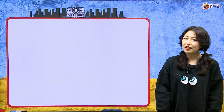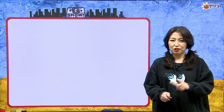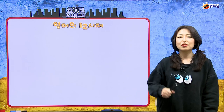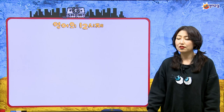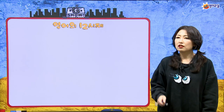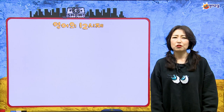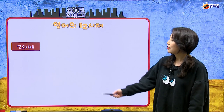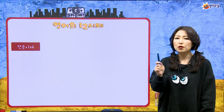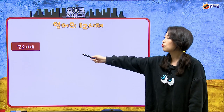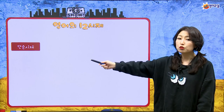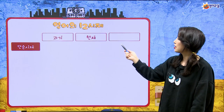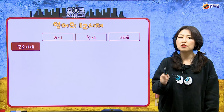시작하기 전에 질문. 영어에는 몇 시제가 있다고? 그렇지, 12시제가 있다고 우리 계속 반복적으로 이야기해 왔어요. 이 12시제를 막 다 나열해서 외우려면 어렵잖아요. 그래서 선생님이 쉽게 외우는 방법 알려줄 거예요. 첫 번째, 12시제의 첫 번째 구성 요소는 단순 시제예요. 단순 시제는 세 종류 — 과거, 현재, 그리고 미래.